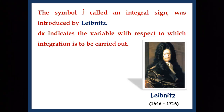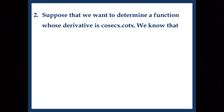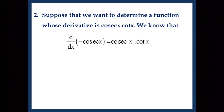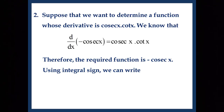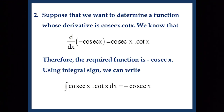Now what does dx stand for? Here dx indicates that the variable of integration is x. Suppose that we want to determine a function whose derivative is cosec x · cot x. We know that d/dx of (−cosec x) is cosec x · cot x. Therefore the required function is −cosec x.